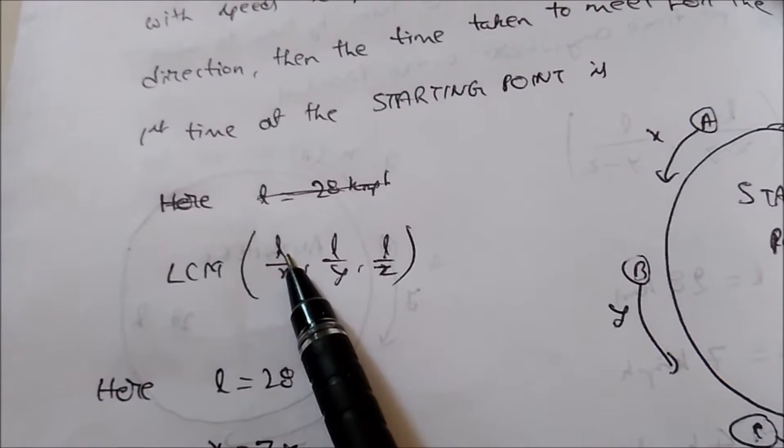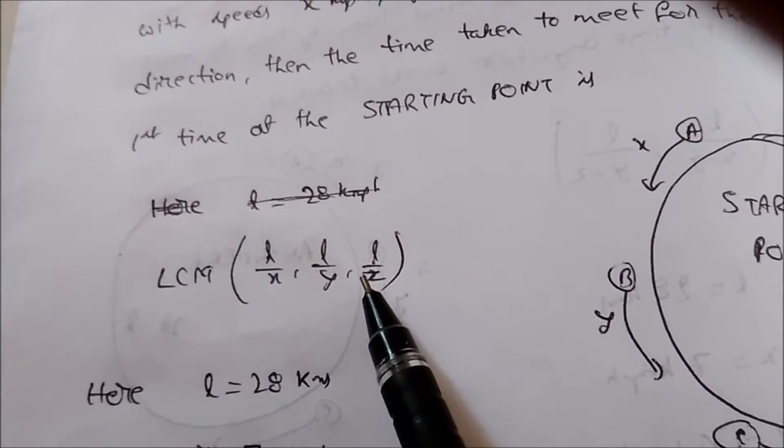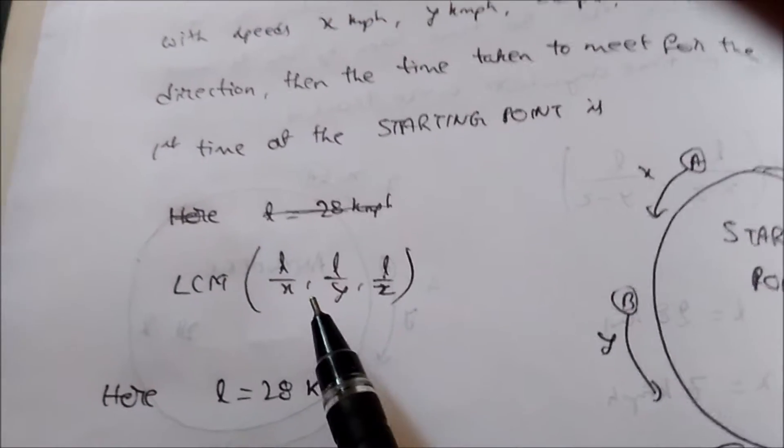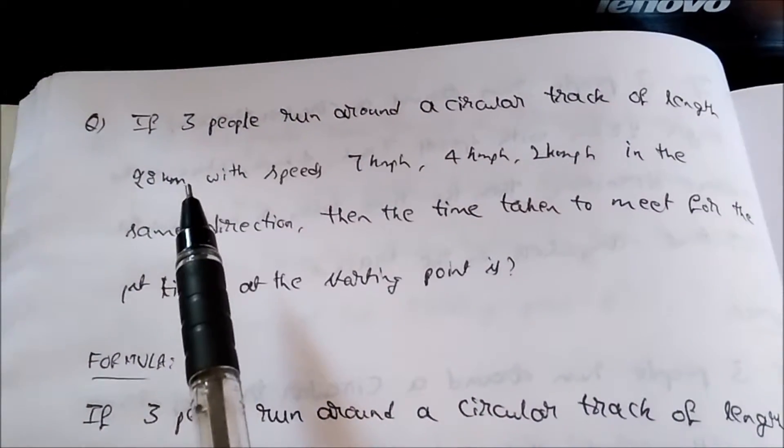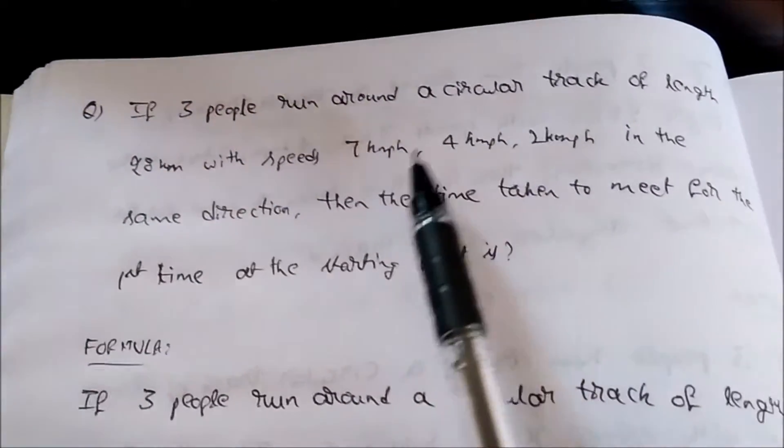Okay, here from the question we will come to know that circular track length is 28 km and speeds are 7, 4, 2. So L is equal to 28 and speeds X, Y, Z are 7, 4, 2.